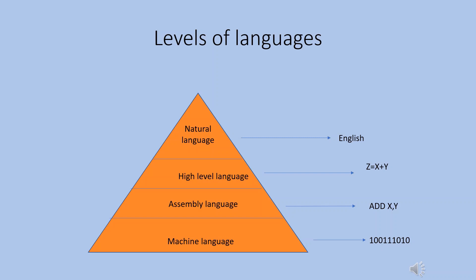Next is levels of language. There are mainly four types of languages. The first one is machine language. Machine language is used for CPU programming. The program instructions are used in binary form. Each type of computer has its own machine language.